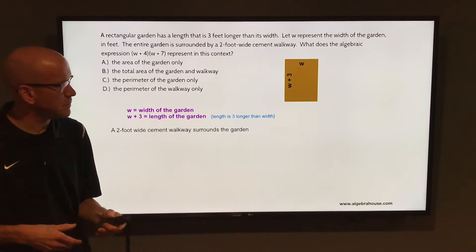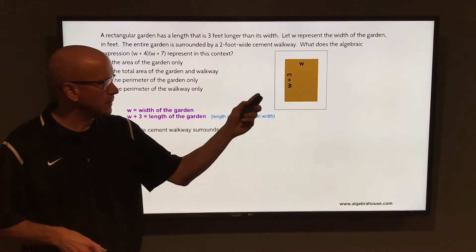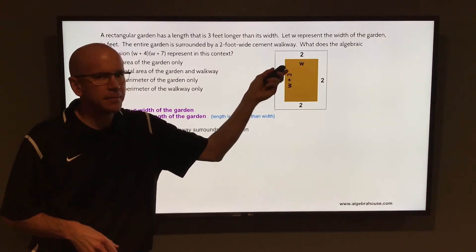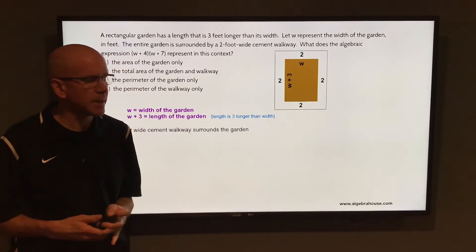You're adding a two-foot wide cement walkway around that garden. So if you do that, you're adding two onto each side of the width and adding two onto each side of the length.